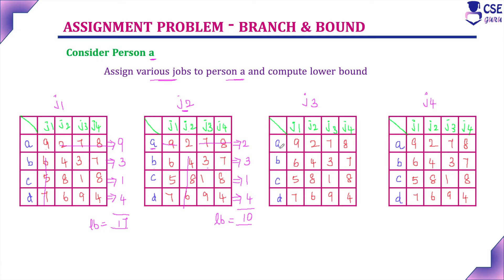Assigning job 3 to person A: the cost is 7. Excluding the same row and same column, for person B the least available cost from {6, 4, 7} is 4, for person C from {5, 8, 8} the least is 5, and for person D from {7, 6, 4} the least is 4. The lower bound value here is 20.